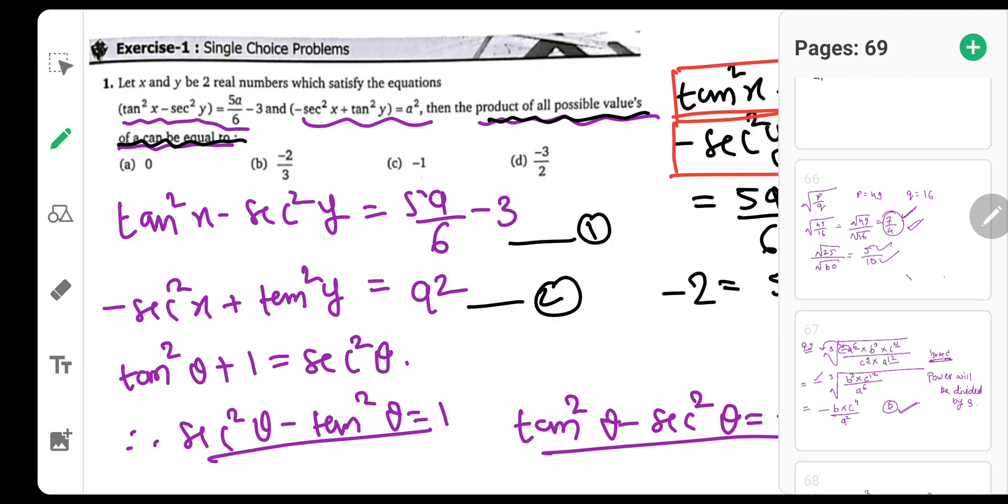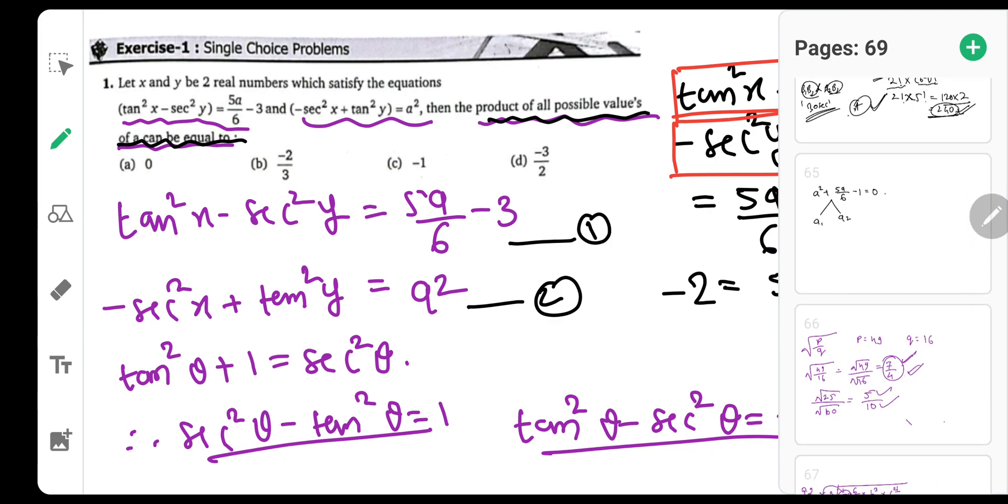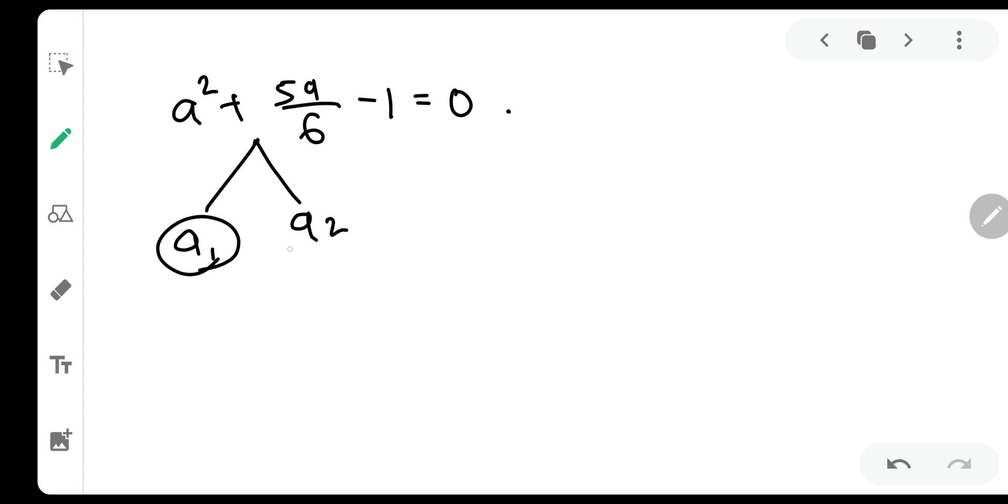So definitely, very simply put, it will have two values of a. These values can be treated as alpha and beta. They have asked us the product of that. That will be simply c by a, and c over here is minus 1 and a is 1, the coefficient of a square. So that will be minus 1.